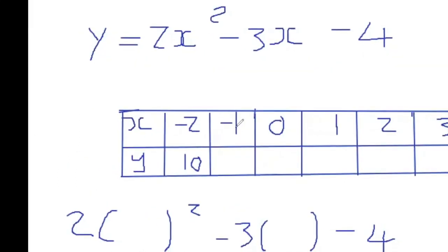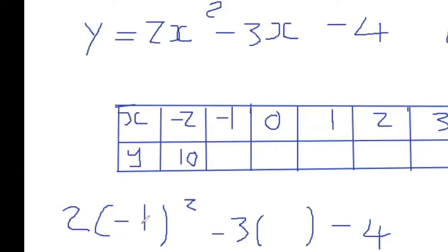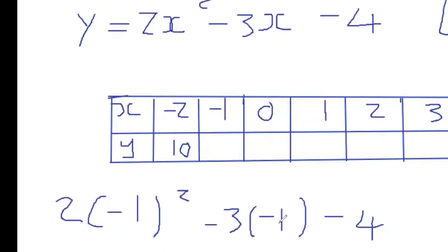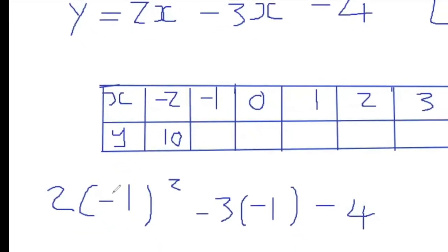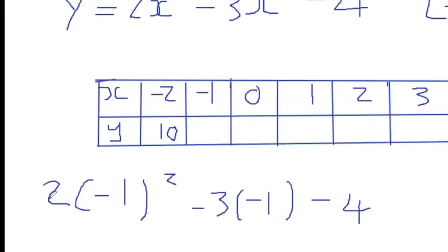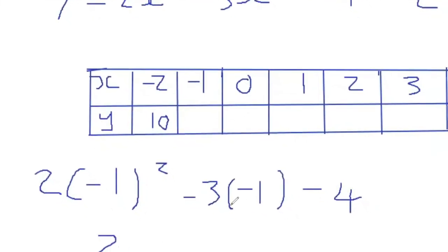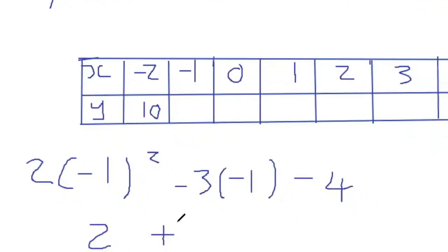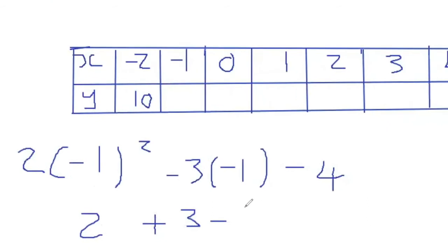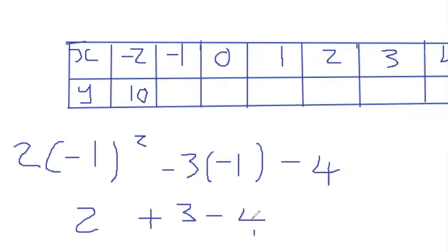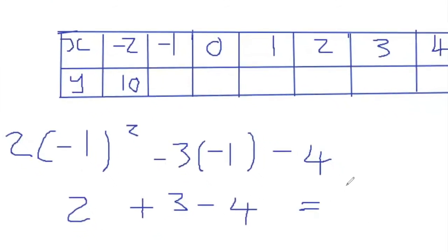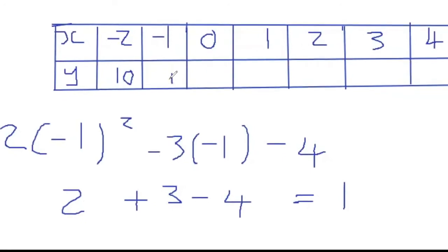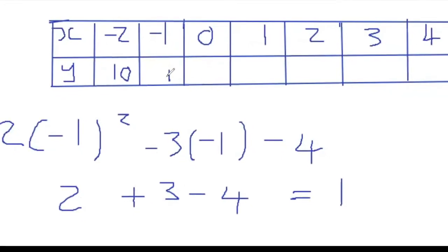Now we're going to substitute negative 1 for x. Square negative 1 to get positive 1, times 2 gives 2. Negative 3 times negative 1 is positive 3, minus 4. So 2 plus 3 minus 4 gives us 1. That's our second y value.